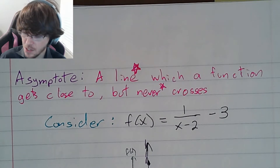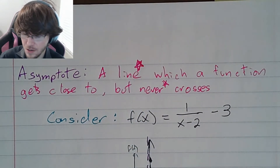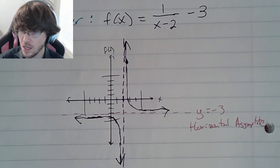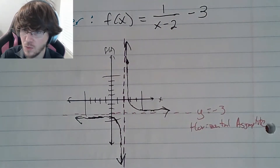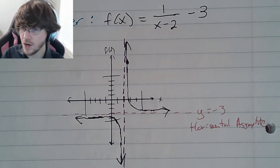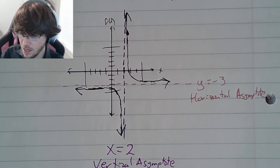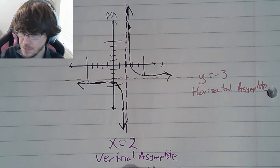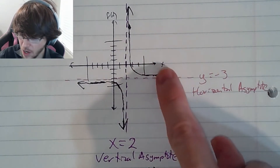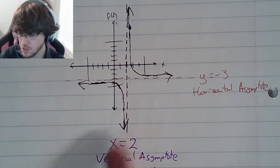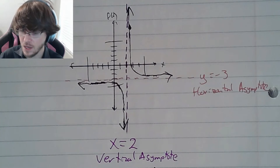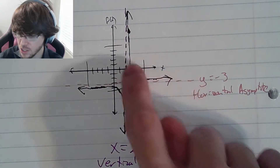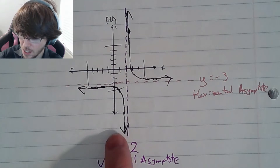Let's visualize what this is. In class I would have had you graph this on your calculator, but I graphed it out in advance. We're going to consider the function f(x) = 1/(x-2) - 3. If you were to graph this function, it wouldn't show the dotted line — I drew that in. That dotted line is a vertical asymptote; the graph is getting close to but not crossing that line. The horizontal asymptote at y = -3 is another one the function gets close to but not touching.